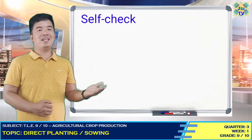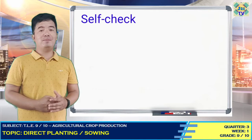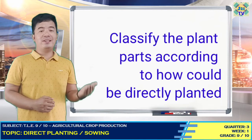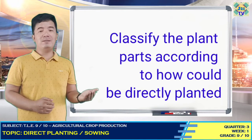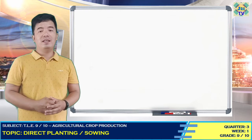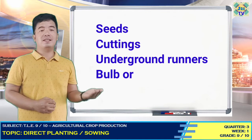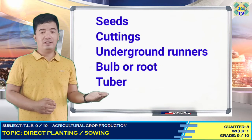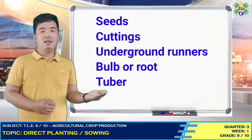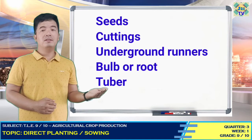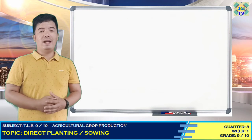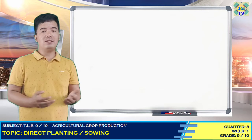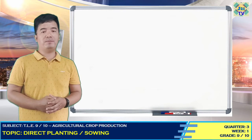Self-check: Classify the plant parts according to how they could be directly planted — either by seeds, cuttings, underground runners, bulbs, or tuber. Write your answers in your test notebook or in a sheet of paper.